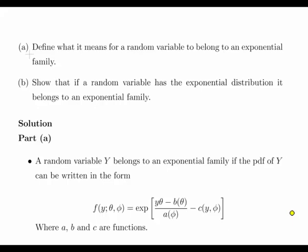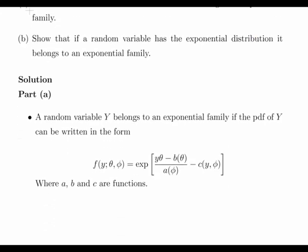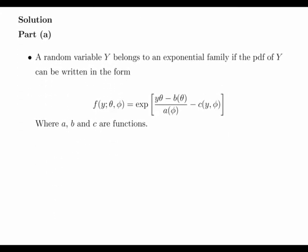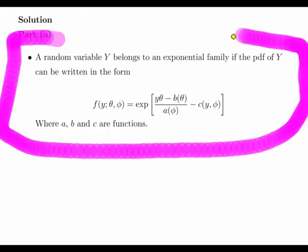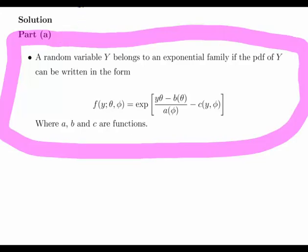Show that if a random variable has the exponential distribution it belongs to an exponential family. So essentially there's a sort of process to this. Now this is a sort of general definition. And by the way I will deliberately mix this format up from one presentation to the next. So I deliberately won't keep this consistent.